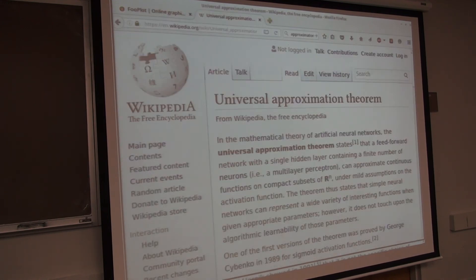Here's a Wikipedia article on it. It says, in the mathematical theory of artificial neural networks, the universal approximation theorem states that a feedforward network with a single hidden layer, I'll talk about what that is in a minute, containing a finite number of neurons, so notice it says finite, not infinite, can approximate continuous functions on compact subsets of r to the n. Do you know what r to the n means?